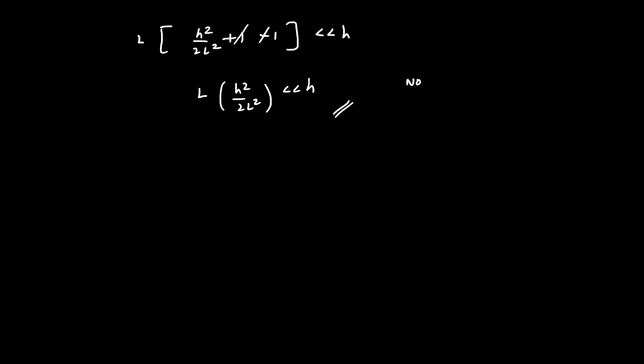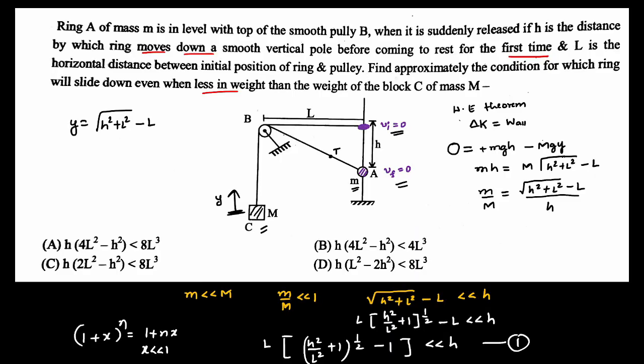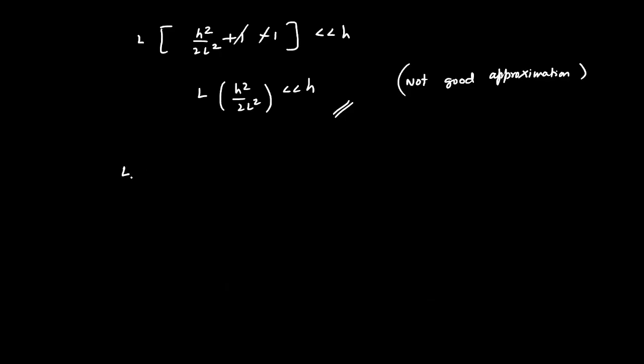So we have to fine tune it. For that we will take higher order terms, so I'll take one more higher order, one more term. So L we have already, so using equation one again, we have one plus h squared by L squared whole power one by two, then minus one, much much less than h.